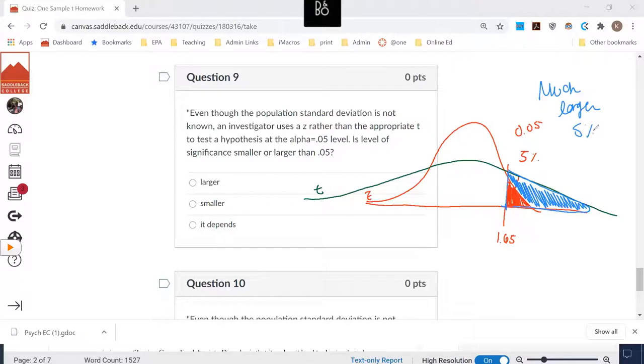So the rejection region for this particular example is much larger than 5%. So my level of significance that I've elected by using 1.65 is larger than 5% in the t distribution that I should have been using.